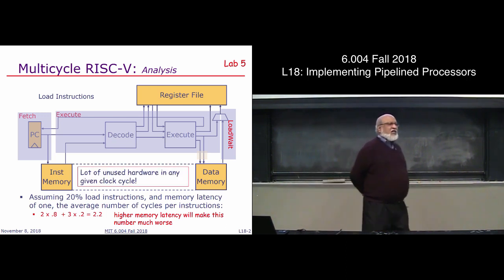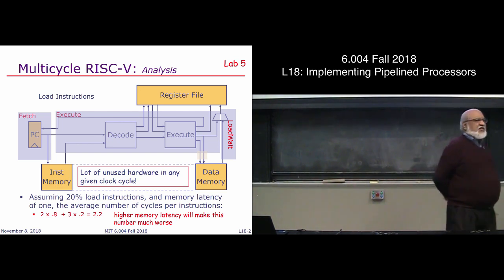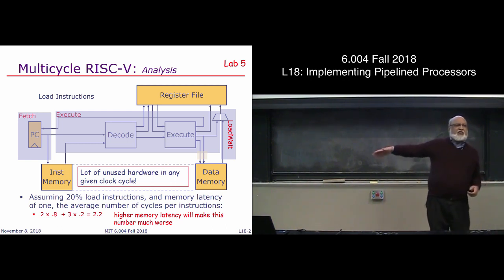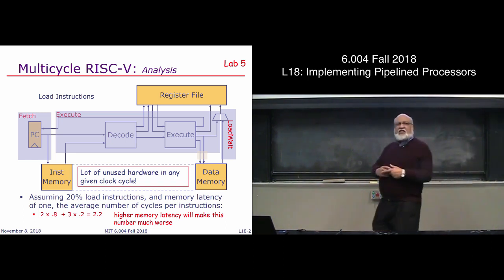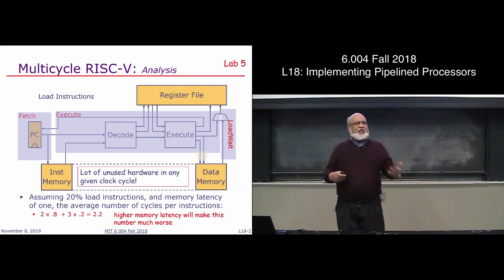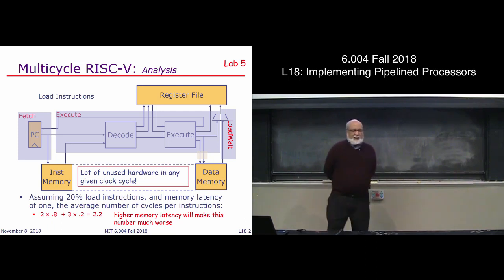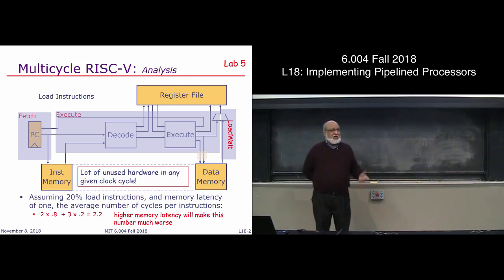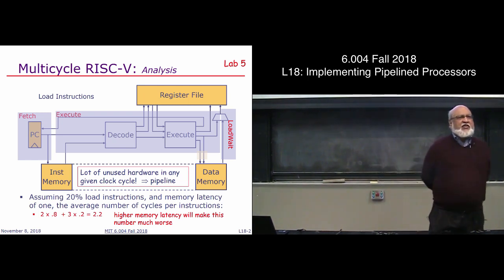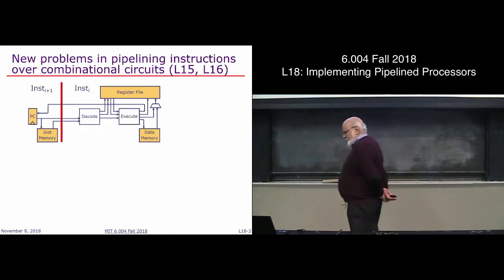Another thing to observe in any multi-cycle system is that there is a lot of unused hardware at any given point. When we are doing fetch, nothing is happening in the execute phase. When we are doing execute, fetch is idling. So can we make better use of the hardware we already have by trying to pipeline the system? That's another motivation for pipelining — use hardware more efficiently and get higher performance.